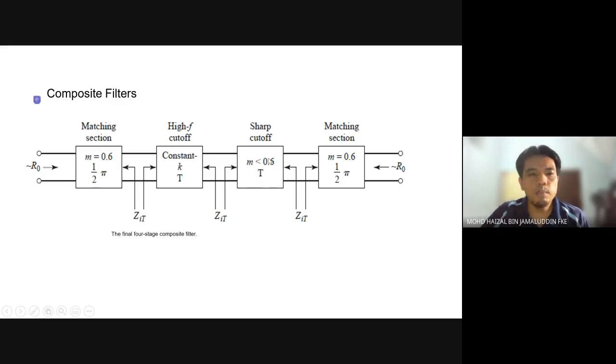In composite filter, we have a four-stage composite filter which is a combination of four stages. We have two matching sections at the input and output, and we have the constant K using the T-section for high cutoff frequency and the M-section here.